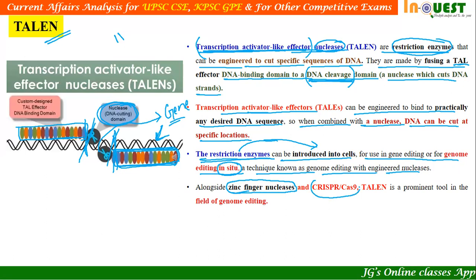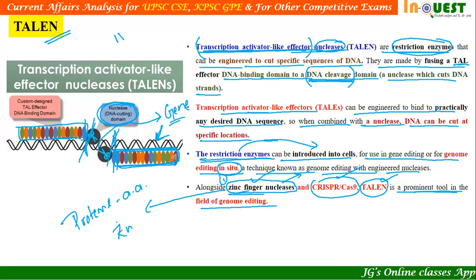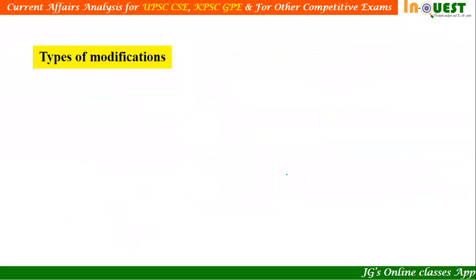Alongside CRISPR-Cas9 and TALEN, Zinc Finger Nucleases are also a prominent tool in the field of genome editing. Zinc finger nucleases are proteins made of amino acids. These amino acids are bound together with the help of zinc and interact with the DNA. This interaction can be used to cut the DNA at a specific location. So the three major genome editing tools are: Zinc Finger Nucleases, CRISPR-Cas9, and TALEN.